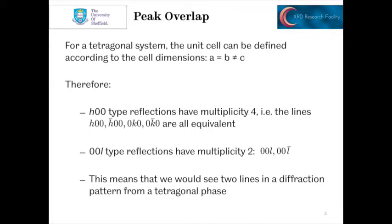If we look at a trigonal system, we now have the A and B lattice parameters still equal, but the C lattice parameter becomes stretched or compressed, so it's no longer equal to A and B. Therefore, the H00 type reflections now have a multiplicity of 4: the H00, -H00, 0K0, and 0-K0 are all equivalent. But the 00L type reflections are not equivalent to those anymore — they have a multiplicity of 2, with 00L and 00-L being equivalent. So when we look at the diffraction pattern for a tetragonal phase, we would see two lines instead of one: a 00L and an H00.